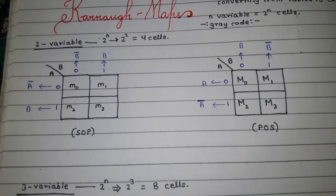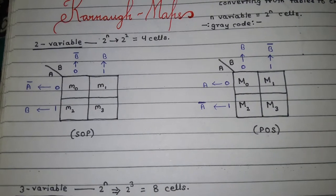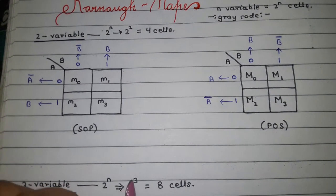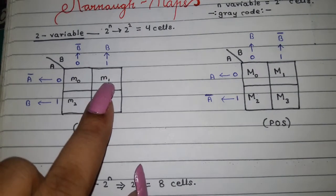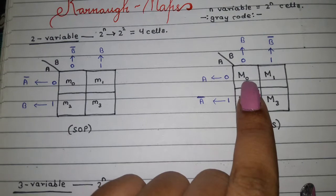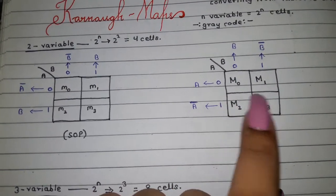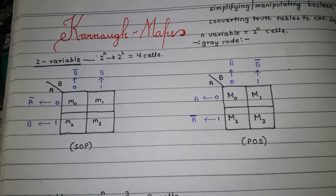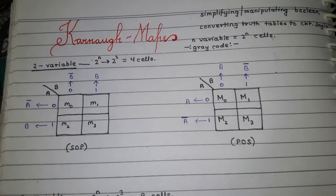If you have any problems regarding min terms, max terms, SOP, POS forms, please check out my previous videos. Now we're going to write min terms in such a fashion: m0, m1, m2, m3. Here we're going to write max terms: M0, M1, M2, M3. This is all for two-variable Karnaugh maps.